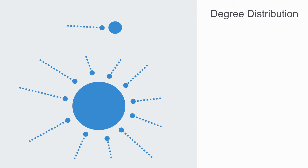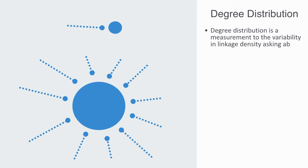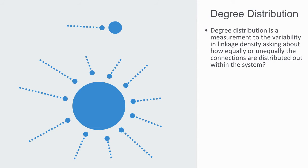More recently, attention has shifted from network connectance to the idea of degree distribution. Degree distribution is a measurement of the variability in link density, asking how equally or unequally connections are distributed within the system. For example, koalas are very specialized feeders, feeding on very few species of eucalyptus, whereas raccoons feed on a wide variety of species.